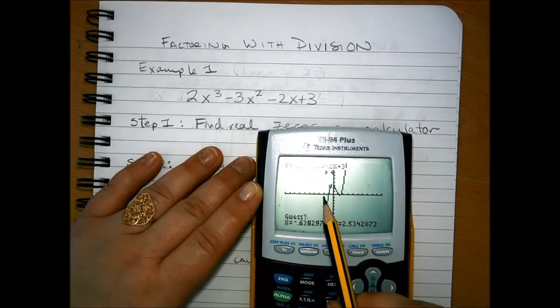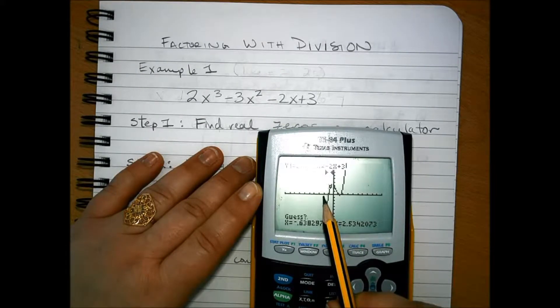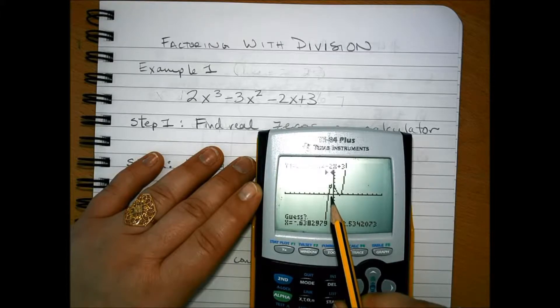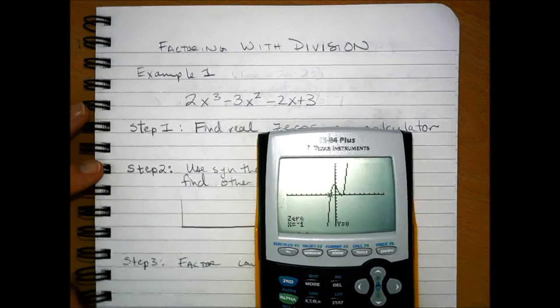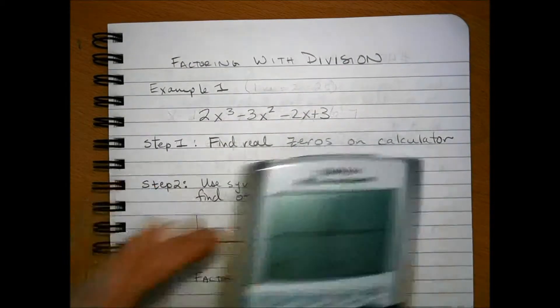And your calculator is going to say, okay, I'm going to look for an input that produces an output of zero starting here and stopping there. And so we get that the zero is negative one.